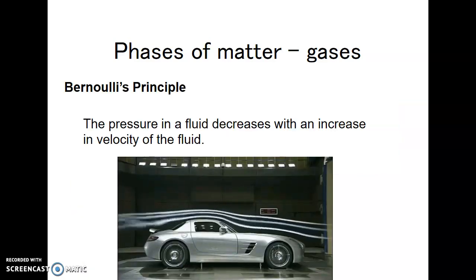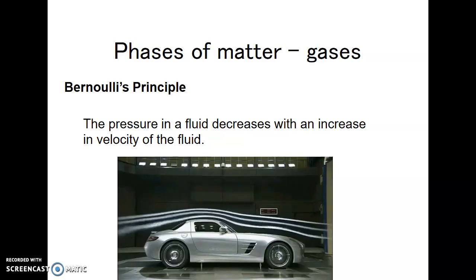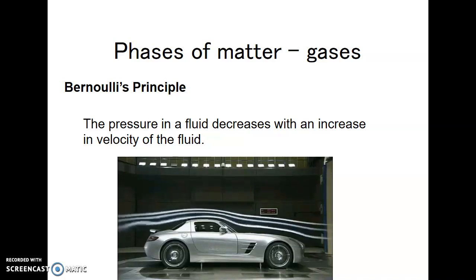Bernoulli's principle tells us that pressure in a fluid decreases with an increase in velocity. Looking at a car, streamlines represent fluid flow — above the front wheel the streamlines are far apart, meaning high pressure; above the roof they're close together, meaning low pressure and faster-moving air. Over the front tire, the air is slowed to create high pressure keeping the car close to the ground. The spoiler in the back changes pressure and airflow. Cars are designed to create pressure over the wheels to push the car down and create more friction as they go faster.